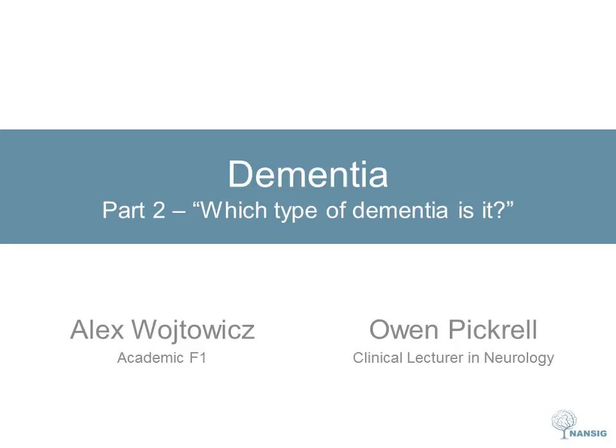Welcome to our second video on dementia. As with the first part, a lot of the information included here is adapted from the book Dementia in Clinical Practice, A Neurological Perspective by AJ Larner. If you want more information on anything discussed in this video, that would be a good place to start. See the further reading slide for more details.